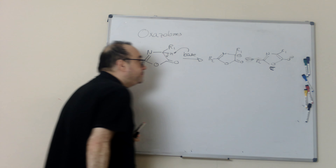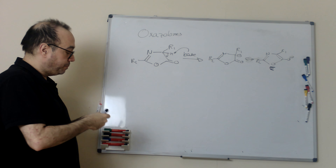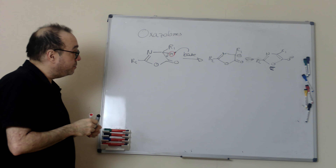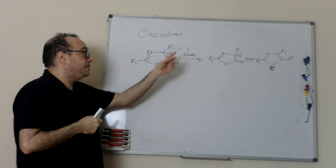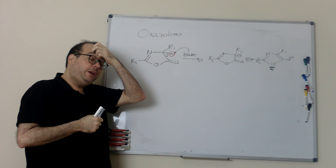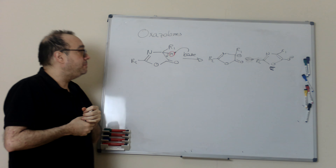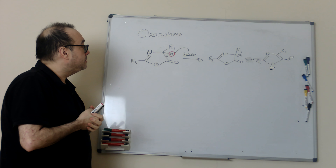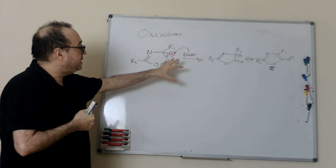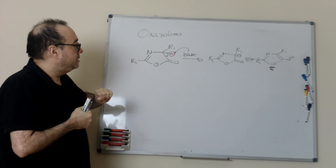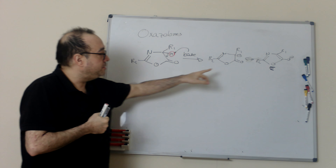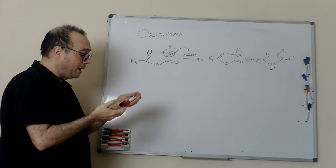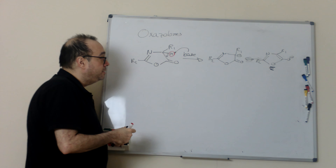If you take a look, this resonance form is aromatic. That means that this proton, because we generate aromaticity when it is removed, should be quite acidic. That means a weak base, like triethylamine, or basically any secondary or tertiary amine, is able to deprotonate this Oxazolone to generate this compound.